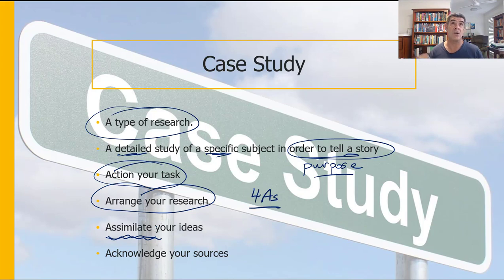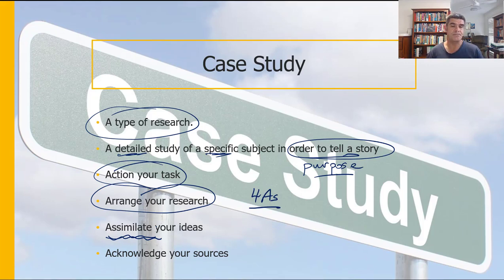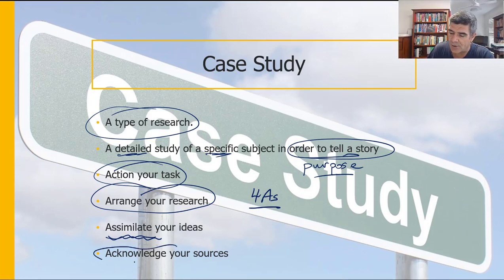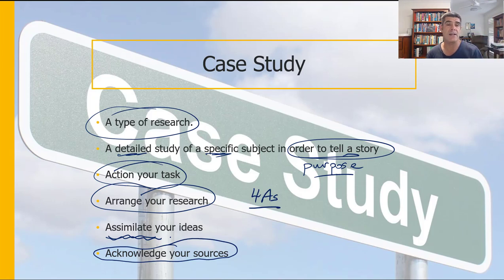To assimilate your ideas, you need to think through what you've read so you can tell a coherent story: where did the eruption occur, when did it occur, how big was it, was it effusive or explosive, how did it impact the atmosphere and the biosphere? If you can answer all of those off the top of your head, you've started to assimilate those ideas and you'll be in a much stronger position for your HSC. The last A is to acknowledge your sources — it's critically important to track all sources along the way.